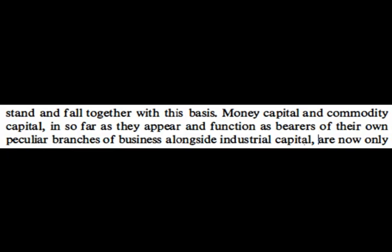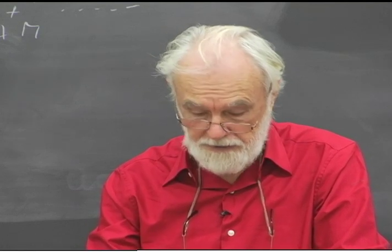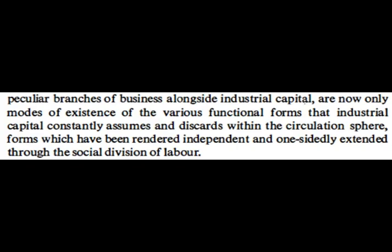On page 136: money capital and commodity capital, insofar as they appear and function as bearers of their own peculiar branches of business alongside industrial capital — he's accepting the idea that there are money capitalists and merchant capitalists — are now only modes of existence of the various functional forms that industrial capital constantly assumes and discards within the circulation sphere, rendered independent and one-sidedly extended through the social division of labour. In other words, merchant capital is there, but we have to understand it simply in terms of the dynamics of what we're looking at.